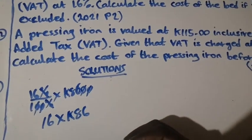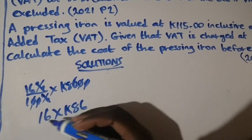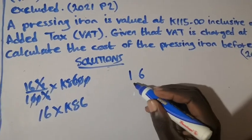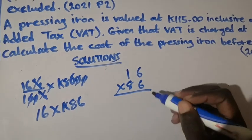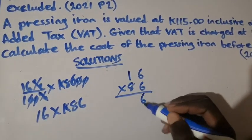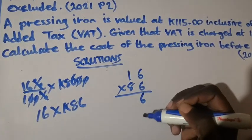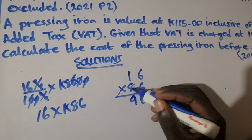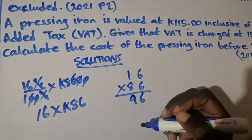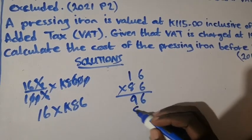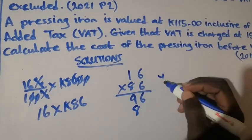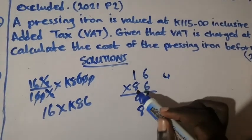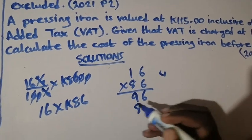So now, 16 times 86. In this paper, you are not allowed to use a calculator. So to multiply the two numbers, we write 16 times 86. 6 times 6 is 36 — write 6, carry 3. 6 times 1 is 6, plus 3 is 9. Then 8 times 6 is 48 — write 8, carry 4. 8 times 1 is 8, plus 4 is 12.